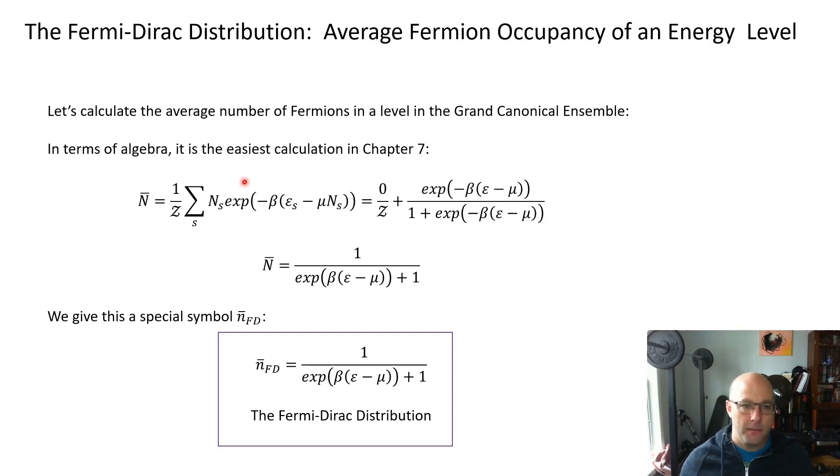So the algebra is easy. We do sum on the average number of particles is the sum on n_s times the probability from the last slide. I factor the 1/Z out of the sum because it's just a number, in other words it's already summed over s. For no occupancy you get a zero and for one occupancy you get this factor, which we then simplify down to n̄ equals 1 over e^(β(ε-μ)) plus one.